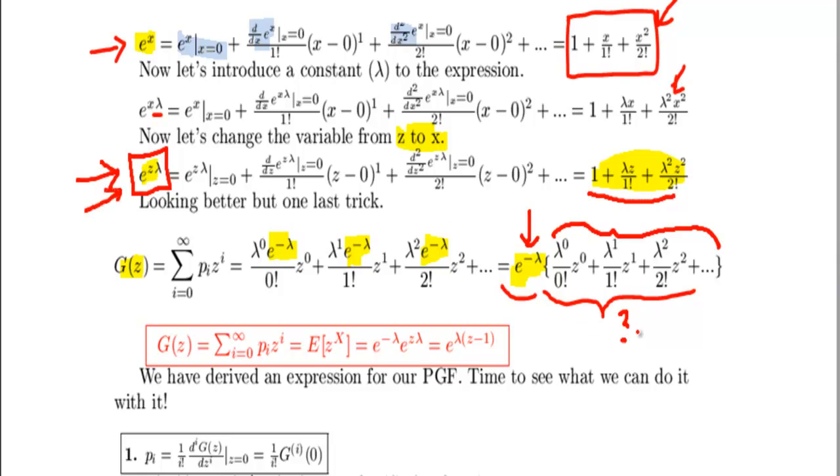And it follows that we can express this expression as e times z to lambda. And by doing so, we actually derived the probability generating function in a neat format, i.e., probability generating function of Poisson distribution is e to the power of minus lambda times e to the power of z times lambda. I've got it here written neatly e to minus lambda times e to the power of z times lambda. It's the same as e to the power of lambda times z minus one.